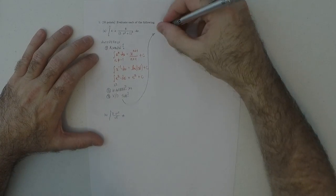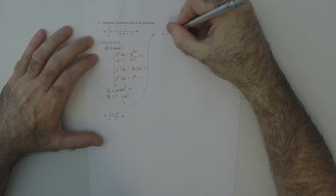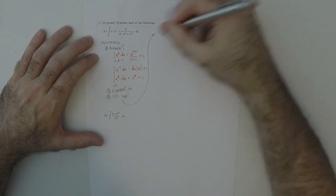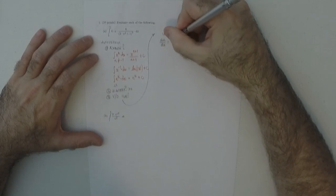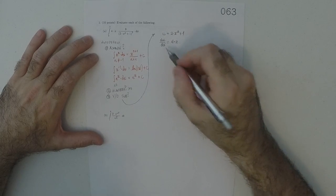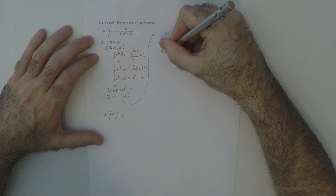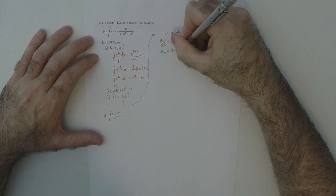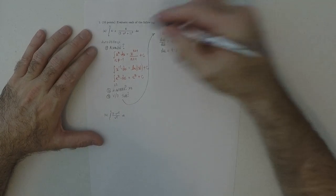And we'll do it like this. We'll say u is that thing in the denominator, 2x squared plus 1. du dx is therefore 4x. But we don't really want du dx. What we want is just du. So du is this 4x dx.